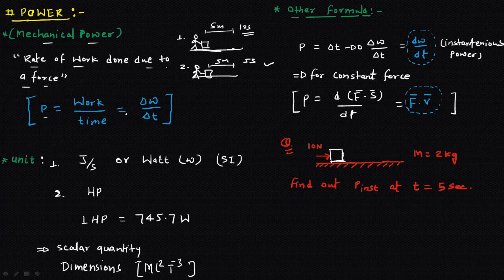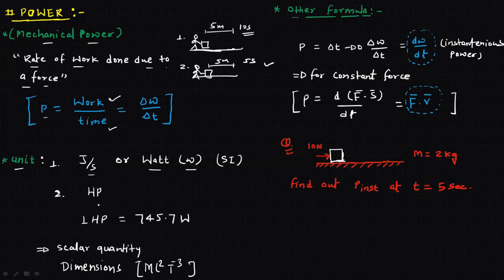The unit of power is joules per second, because the unit of work is joules and the unit of time is seconds. We can also call it a watt, represented by W. Another unit of power is horsepower, represented by hp, and one hp equals 745.7 watts, which we round to 746 watts.